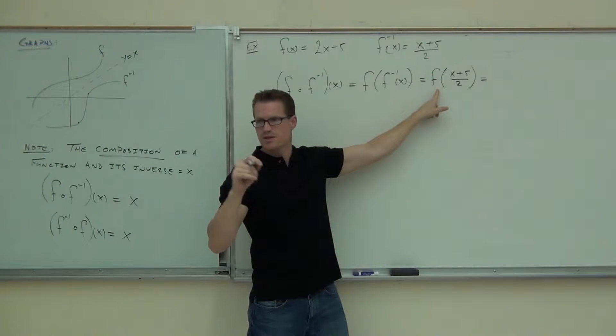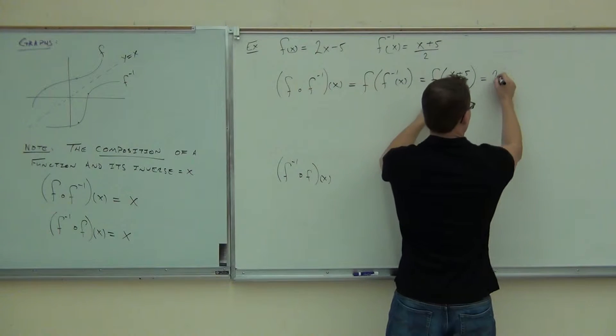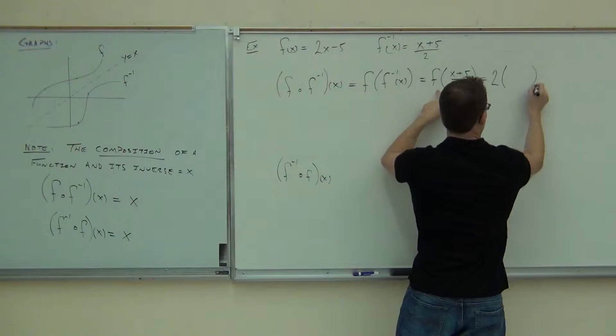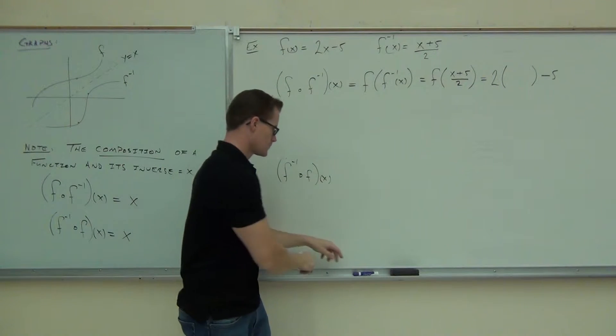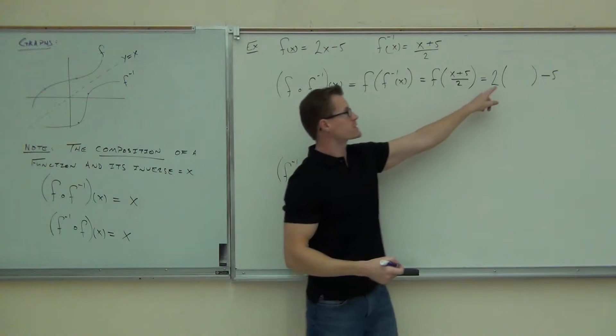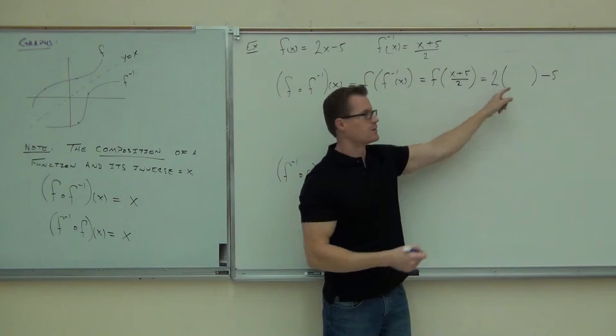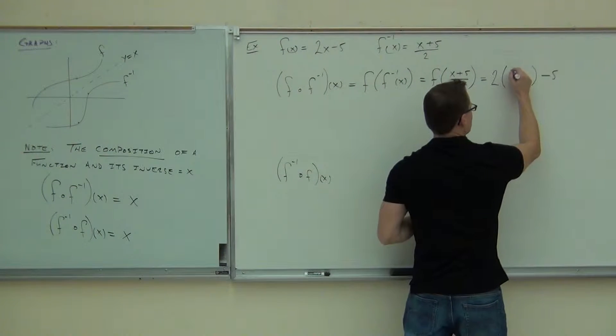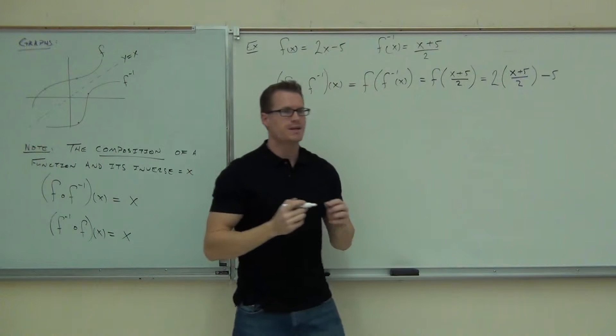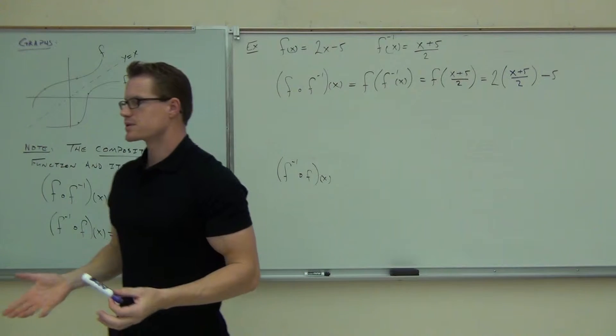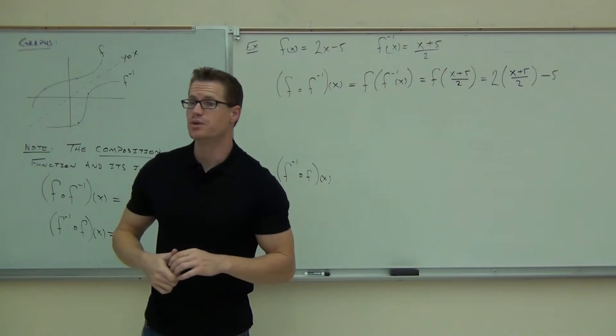Is this coming back to you? 2x minus 5, that's two parentheses minus 5. Can you tell me what goes inside that parentheses? Well, that's exactly what we had in that parentheses. Now, what happens? Do you see any simplification you can do?